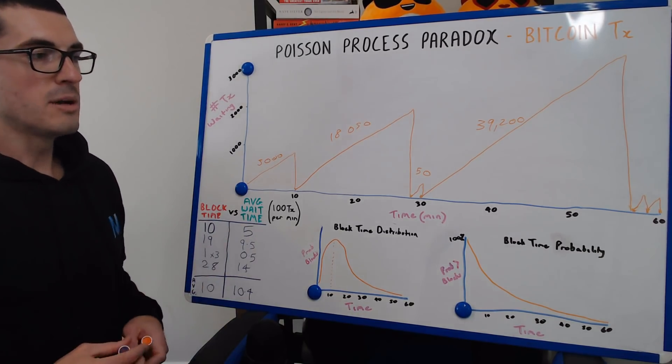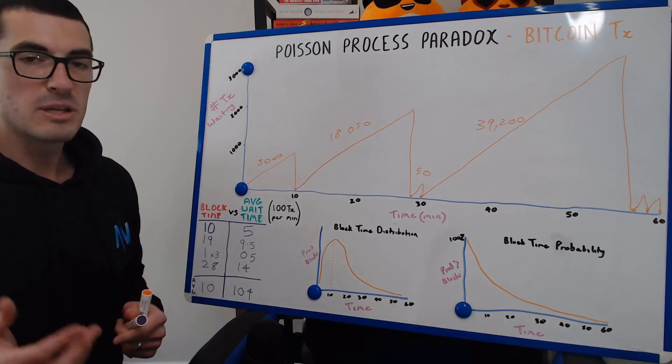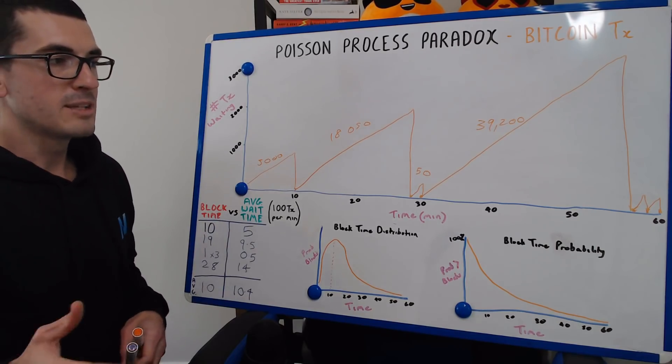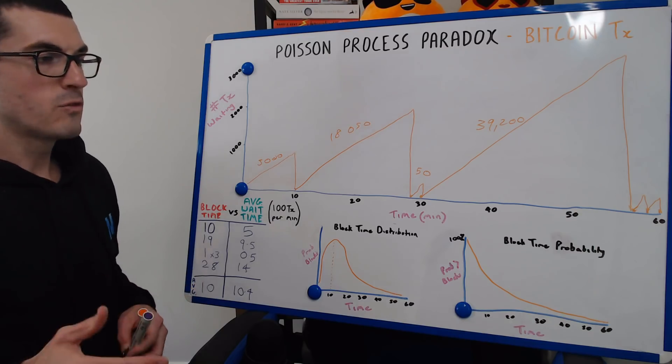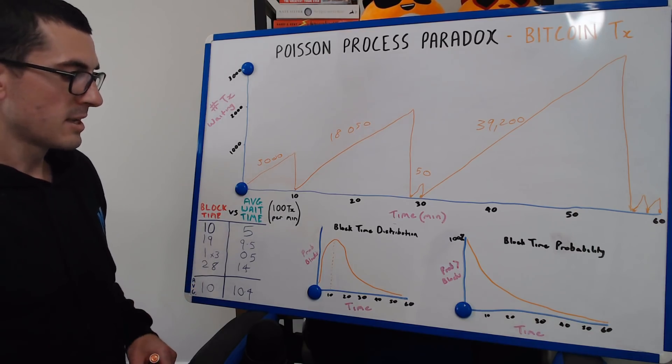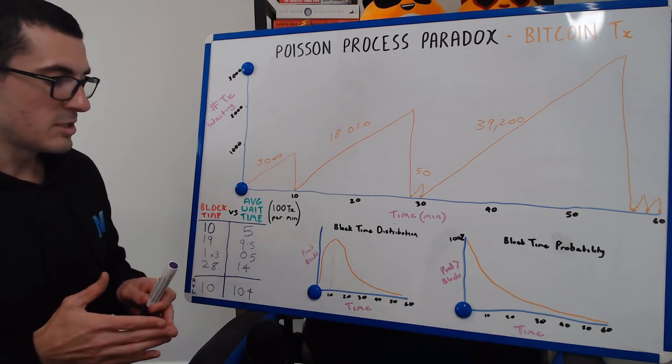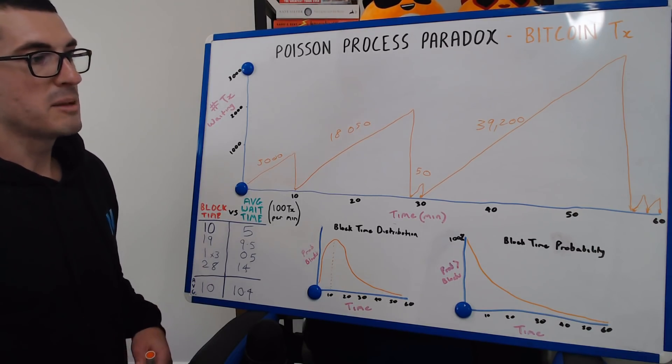Now, if we continue to do this over time, just like flipping a coin with no memory, it's always going to end up being about 50%, but it doesn't matter what happened before, it doesn't determine what happens next. So that number is going to continue to narrow towards an average wait time of 10 minutes because of these probabilities.